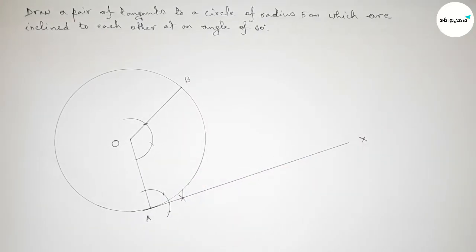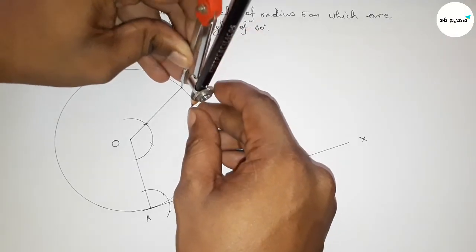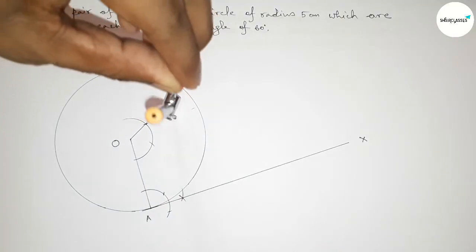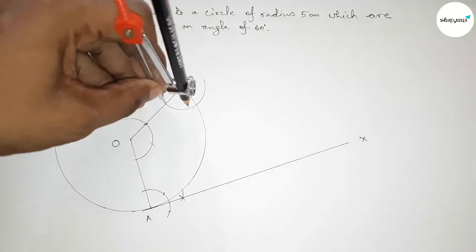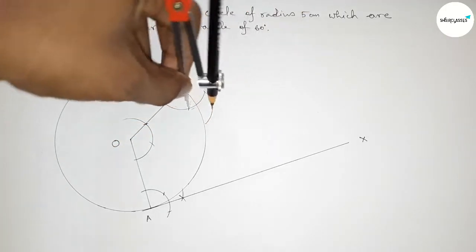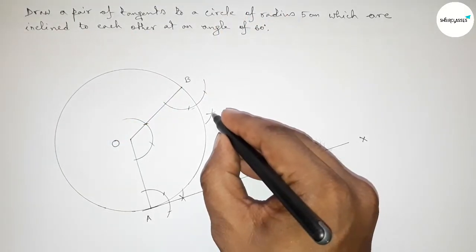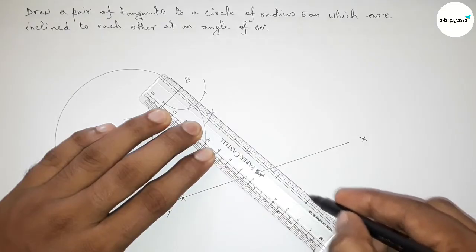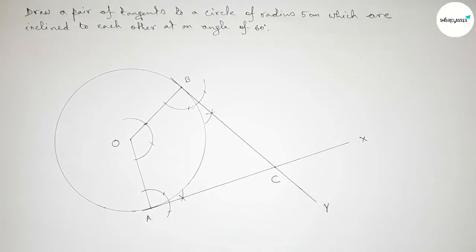Joining this line to get a 120 degree angle at point O, and taking point B. Similarly, we have to draw a 90 degree angle on point B using the compass — taking any length, drawing arcs, cutting here, and cutting here. Both curves intersect at a point, so joining this line — this is also a tangent. Taking point Y.